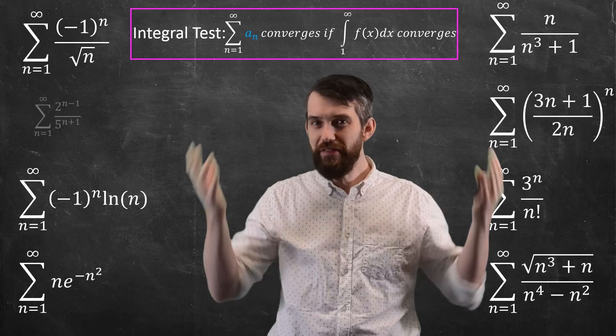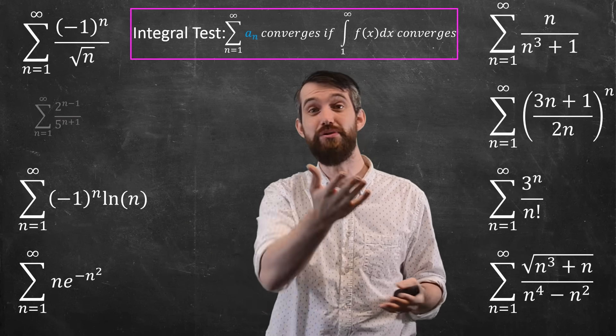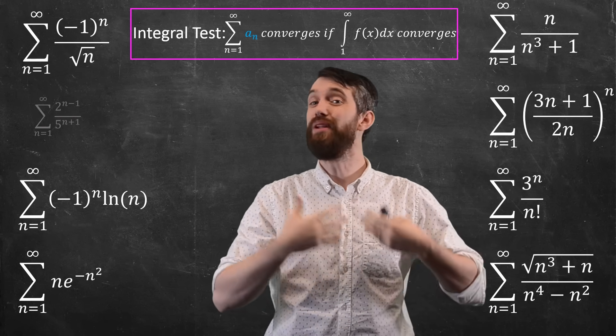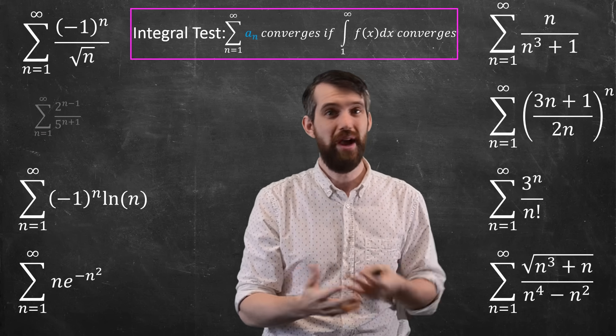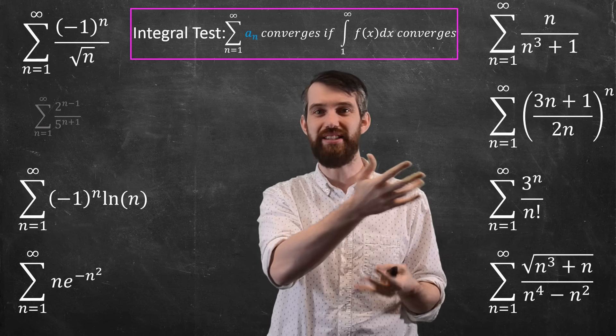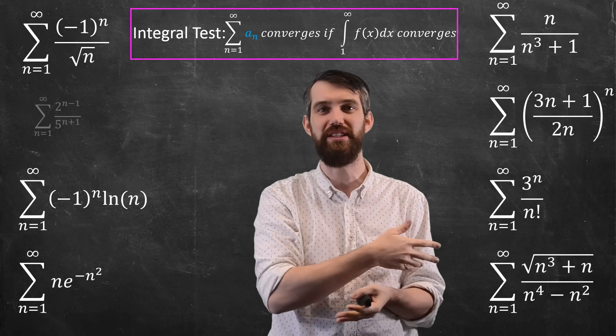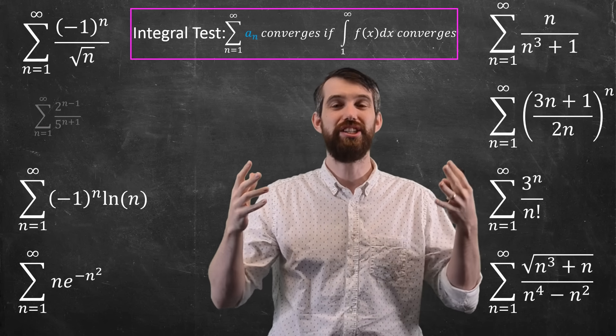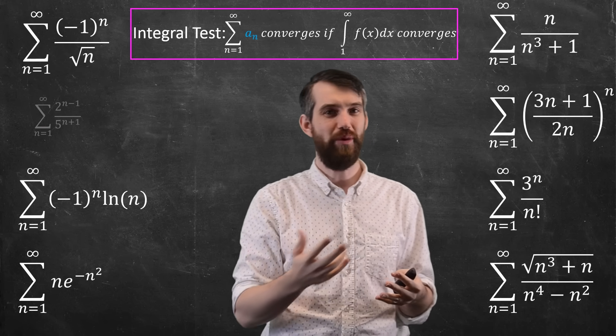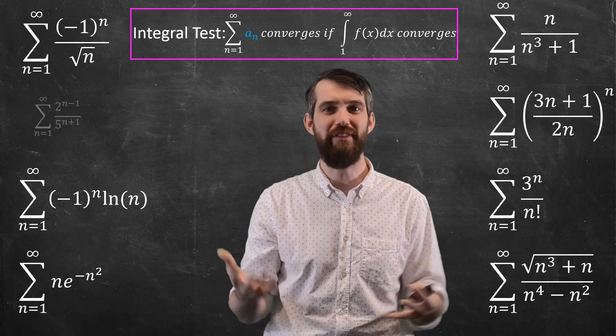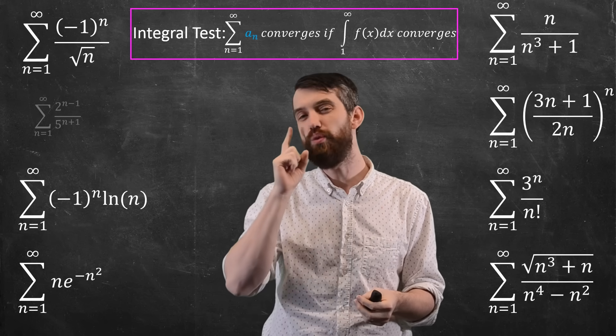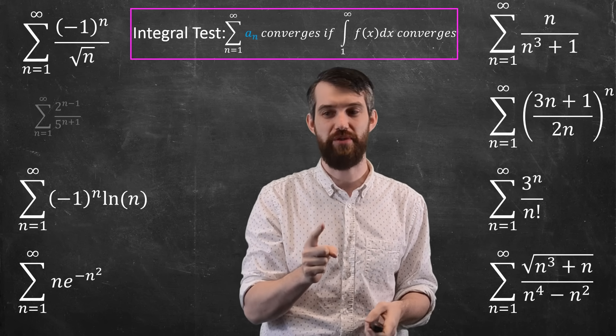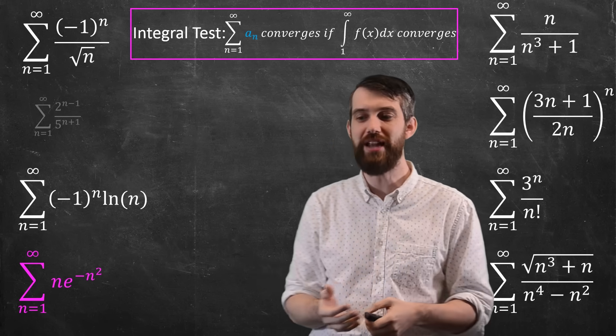Now, many of these series, it doesn't make sense to use an integral test on. For example, we can't really have a nice function representation of the factorial term. Minus 1 to the x is messy, although there's some ways to deal with it in terms of cosines, but it's just challenging for us. Some of the ones we have on this side with square roots into the power of n's, if you try to integrate them, they're going to be really hard. But there is one that is screaming out to be integrated, which is this one with this negative exponential down here.